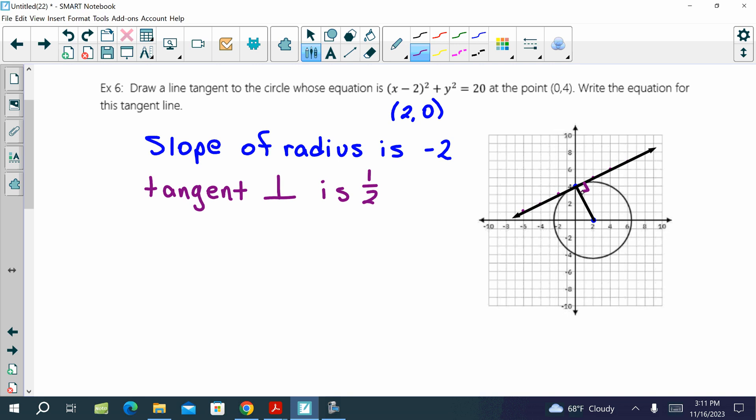So we've drawn it. We've done the first half of the problem. The second half says write the equation for this tangent line. So it's one half x plus four. Very good. One half x plus four. We already found the slope. And the problem gave us the y-intercept. Any questions? Wonderful. Thank you.